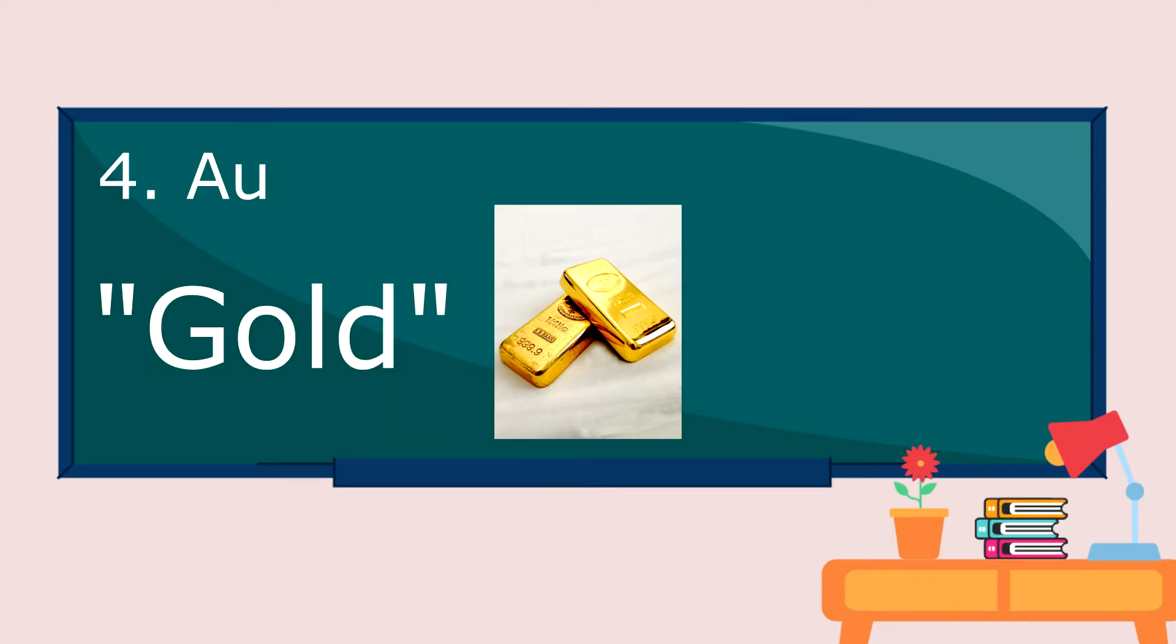Next is gold. This element is found in the periodic table. And gold is composed of only one atom. And this is a pure substance. This is commonly used in pieces of jewelry.